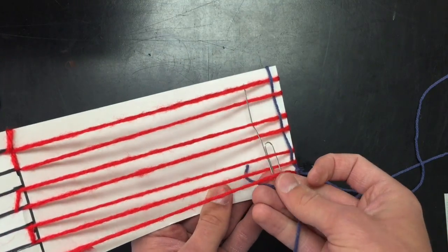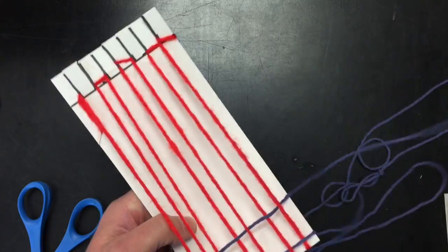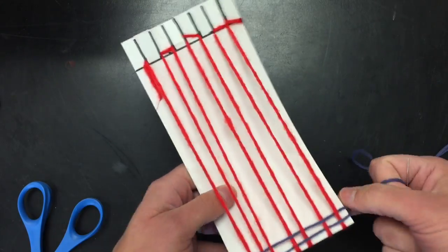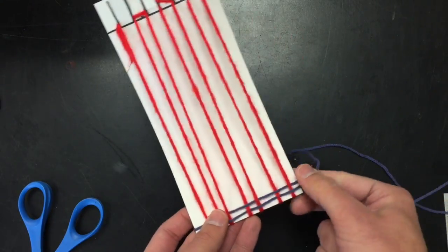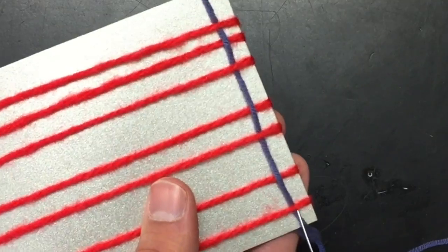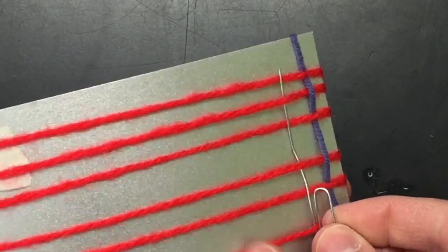Under, over, under, over, under, over, so on and so forth. Every time you go around either the front or the back, the layer of yarn should be the opposite of the layer that was before it.